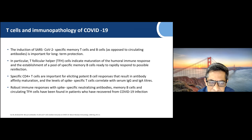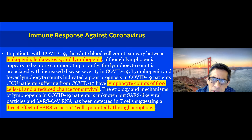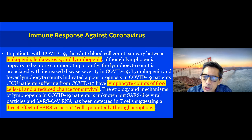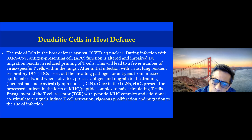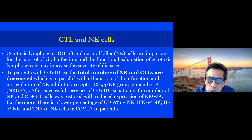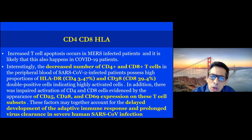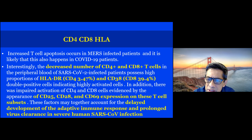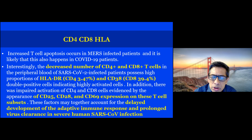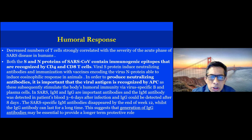Spike-specific T cells which correlate with IgG and IgA titers, robust immune response with spike-specific neutralizing antibodies, memory B cells, and circulating T follicular helper cells are found in people who have recovered from SARS-CoV-2. The immune response against coronavirus includes leukopenia, leukocytosis, and lymphopenia — lymphocyte counts below 800 cells reduce chances of survival. As lymphocyte counts drop, like lymphocytopenia in HIV/AIDS, there is a direct effect of virus on T cells through apoptosis. HLA DR, CD8, CD25, CD28, and CD69 expression in T cell subsets is blunted, leading to delayed adaptive immune response, prolonged virus clearance, and severe immune response.